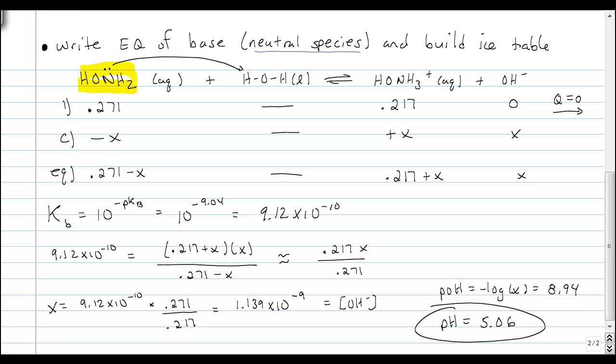And once again, I've redrawn that in the Lewis form so we can see the two electrons attacking the hydrogen on the water. And I've built an ice table. We've put in our initial amounts, 0.271 and 0.217. There is no hydroxide to begin with.